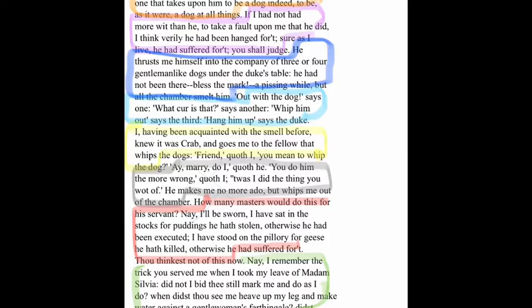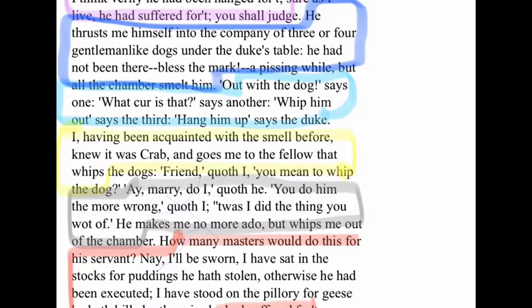The next part: 'I, having been acquainted with the smell before, knew it was Crab. And goes me to the fellow that whipped the dog. Friend, quoth I. You mean to whip the dog? I marry do I, quoth he. You do him the more wrong, quoth I. 'Twas I did the thing you wot of.' Translation: since I know that smell, I knew it was Crab. So I went to the man who wanted to whip the dog and said, friend, buddy, pal — are you going to whip the dog? Yes I am, he says. Well, you'll make things even worse for him. That was me — I was the one who did that thing you know about.